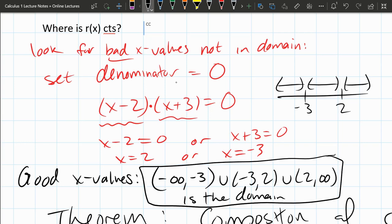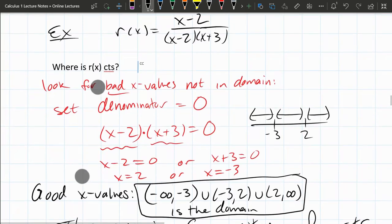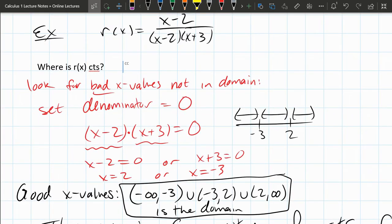And these will be all the x values this function is continuous for. Remember, because it's a rational function, rational functions are continuous for all x values in their domain.